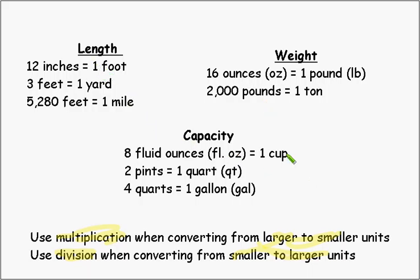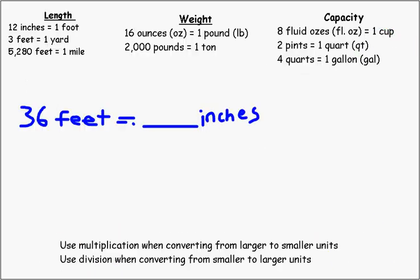That's how we do our conversion. We can also do the work we've done with ratios. So if I'm going to convert 36 feet to inches, that's like saying for every 1 foot is 12 inches. So what would that equal if I had 36 feet?